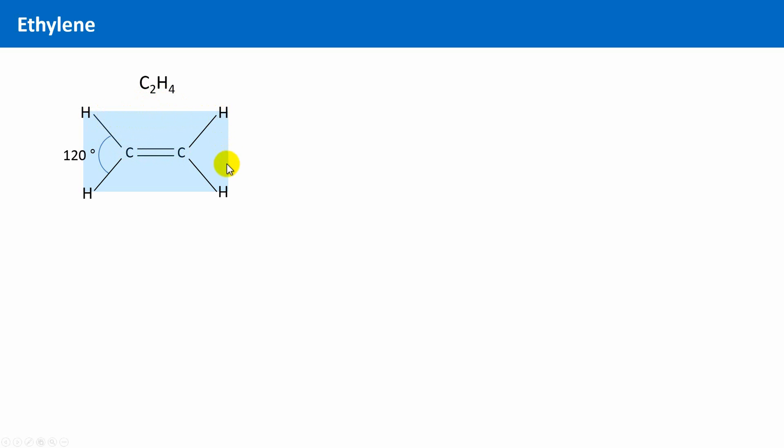Geometrically, ethylene is a flat, planar molecule. All atoms lie in the same plane, and the bond angles are all 120 degrees.